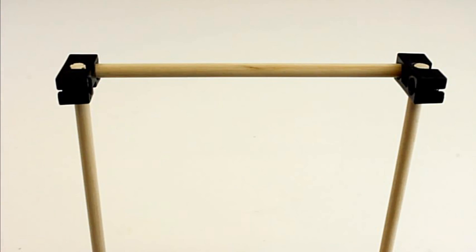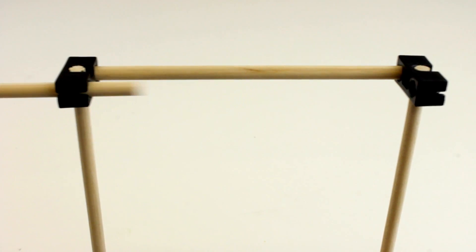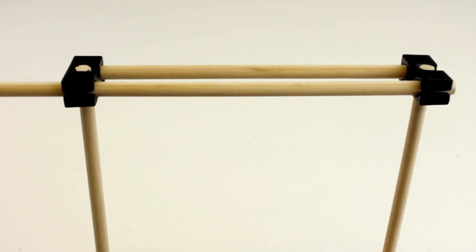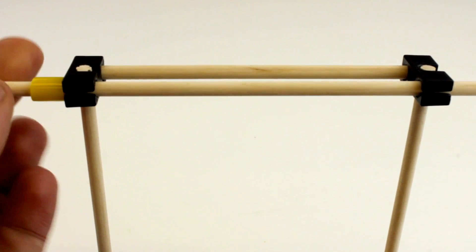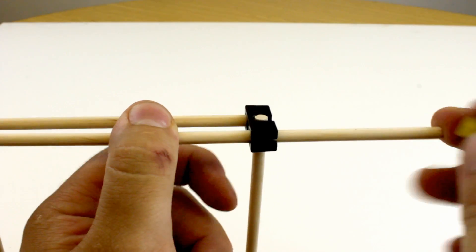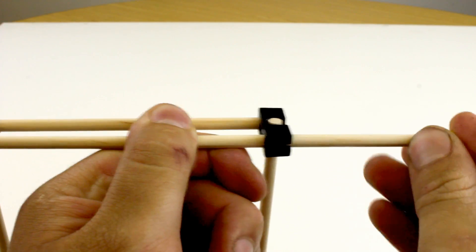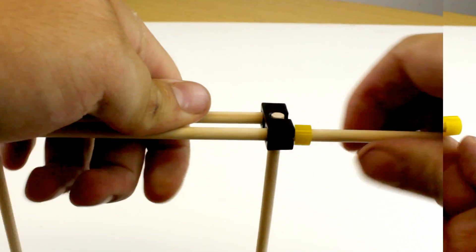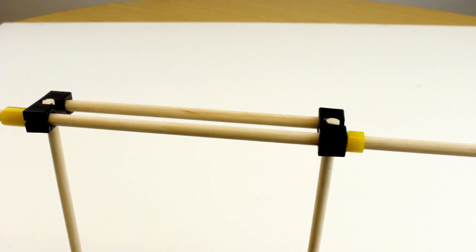Take the dowel with the hub on it and place it into the holes that you previously reamed out. Cut another small piece of slide stop and place it onto the other end of the dowel, then slide it down so it almost touches the perpendicular block.